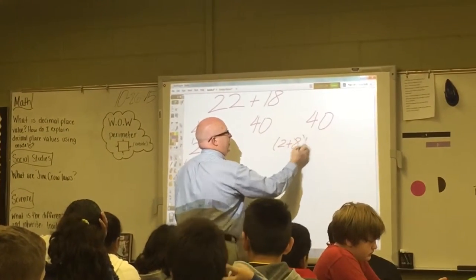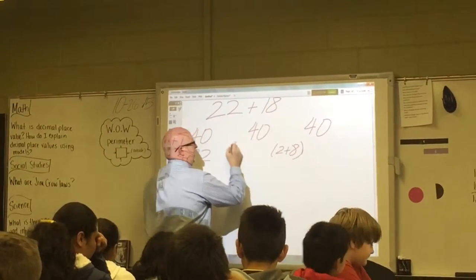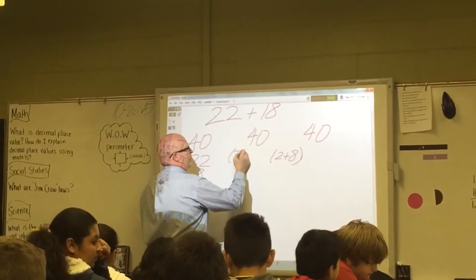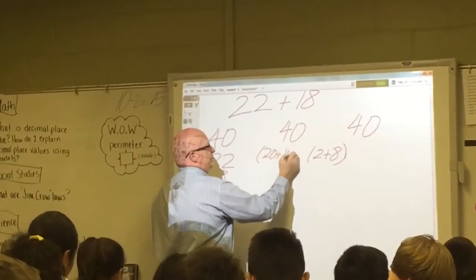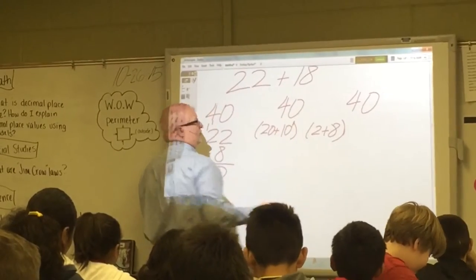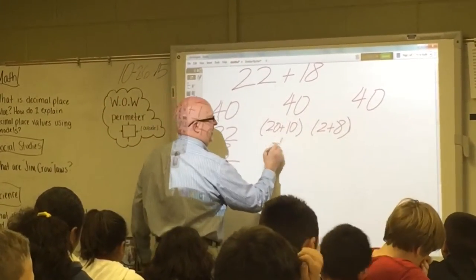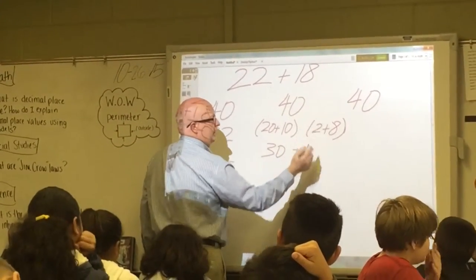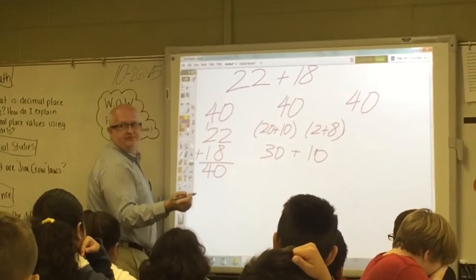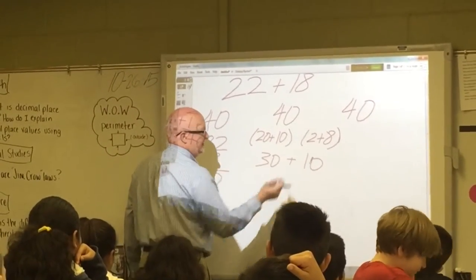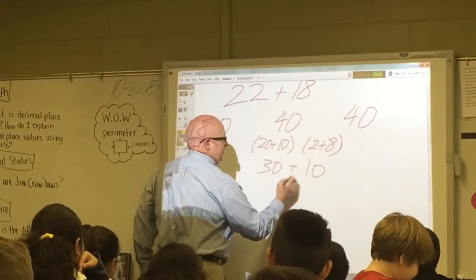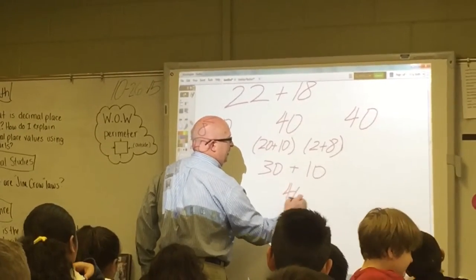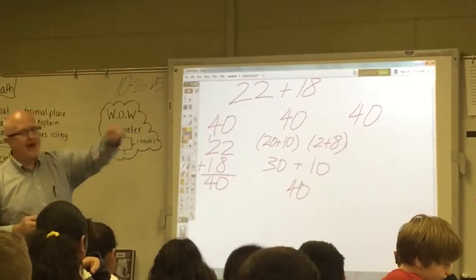2 plus 8 over here, and 20 plus what over here? 10. And then what happens? I add 20 and 10 — 20 and 10 add up to 30. And then 30 and 10 are multiples of 10, of course equal 40. What strategy was that that you used to solve? You broke the numbers down.